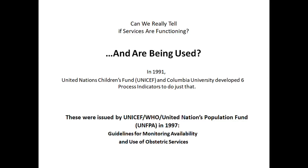Can we really tell if the services are functioning and being used? In 1991, UNICEF and Columbia University developed six process indicators to do just that. These were issued by UNICEF, WHO, and the United Nations Population Fund in 1997.